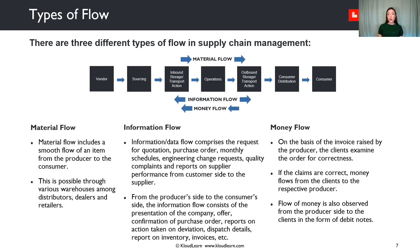The third type of flow is money flow. On the basis of the invoice raised by the producer, the clients examine the order for correctness. If the claims are correct, money flows from the clients to the respective producer. The flow of money is also observed from the producer side to the clients in the form of debit notes.